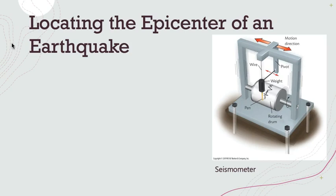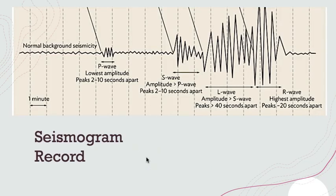As seismic waves pass through the ground supporting the seismometer, the machine moves with the ground recording the shaking. The more intense the energy passing through, the greater the shaking, which will be reflected in the seismogram — the record of the earthquake as recorded by the seismograph. This is an example of a typical seismogram recording, which reveals that not all seismic waves are the same.